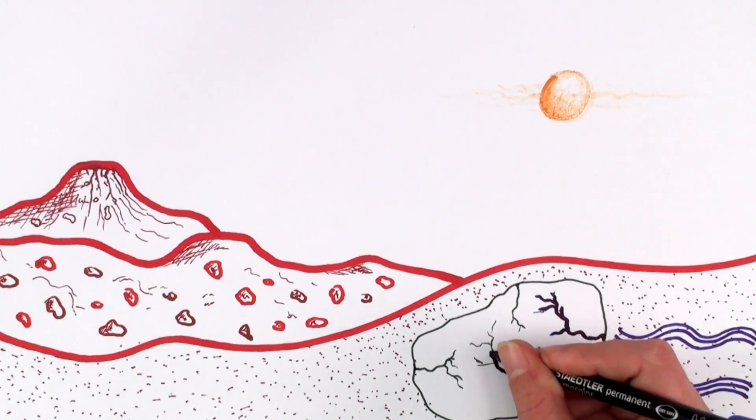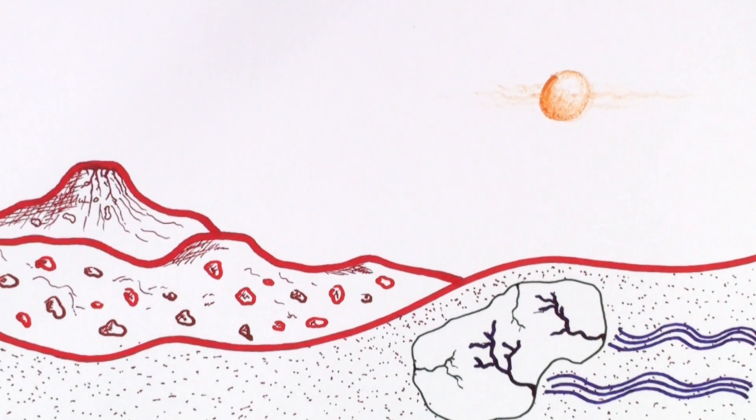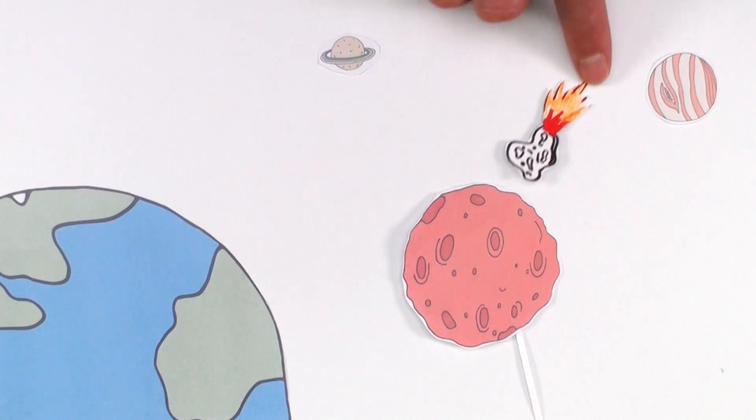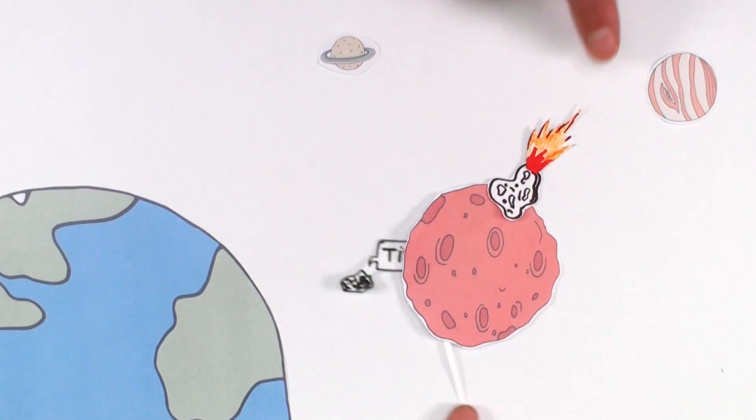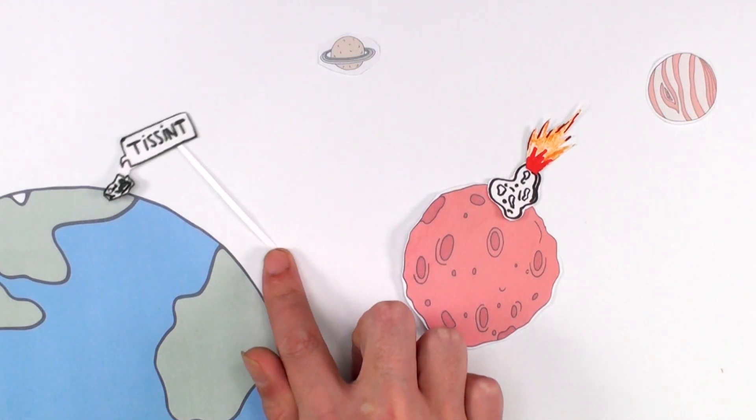So I stayed there, impregnated with organic-bearing fluid, for another undefined time, until I was reached by the shock of a second asteroid. This one hit me so hard that I escaped the Martian gravitational field and started a long trip towards the Earth.